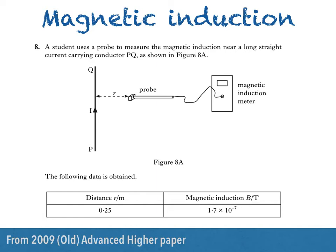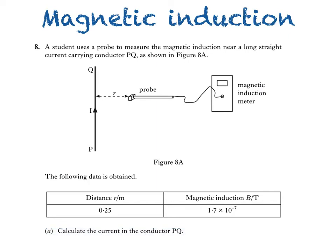Here's a question from the 2009 old Advanced Higher paper. A student uses a probe to measure the magnetic induction near a long straight current carrying conductor PQ, as shown in figure 8A. The following data is obtained. We're then asked to calculate the current in the conductor PQ.